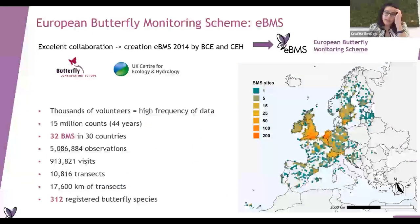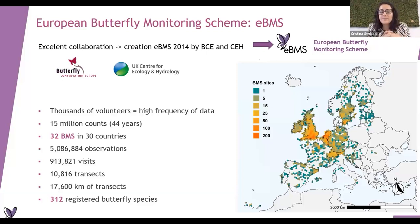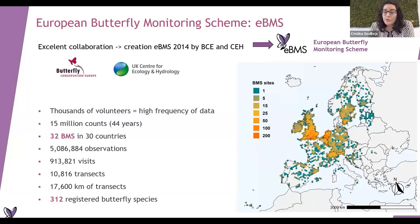So in 2014, all the different countries were creating these BMS - these schemes for monitoring butterflies. And in 2014, Butterfly Conservation Europe and UK Centre for Ecology and Hydrology decided to create EBMS, the European Butterfly Monitoring Scheme, and basically to create a central database to put all the data together. You can see on the map the number of transects currently active or recording data up to 2020. We are in 30 countries, 32 BMS.